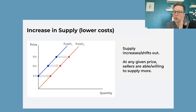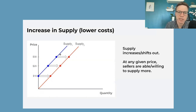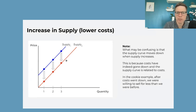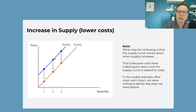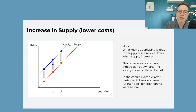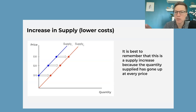An increase in supply is when the curve shifts out. At any given price, suppliers are willing to supply more — that's why it's called an increase in supply. Now this can be very confusing because the supply curve looks like it's going down vertically, and that's accurate — it's because the costs have been lowered. If suppliers' costs go down, at any given price they can supply more. Since the supply curve represents costs, you could look at it as costs going down. But ultimately we think about this as an increase in supply because at any given price, suppliers can now supply more. A decrease in supply is when the curve shifts back — thinking about this vertically, that's because the costs have gone up.